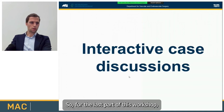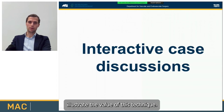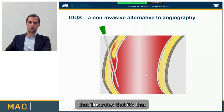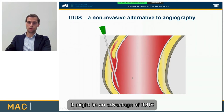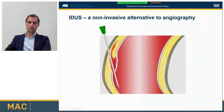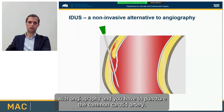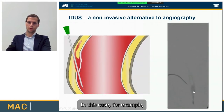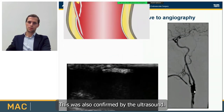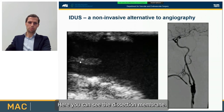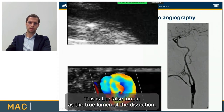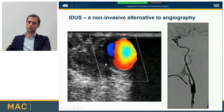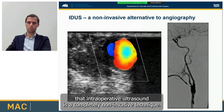For the last part of this workshop, I brought a couple of interesting cases that illustrate the value of this technique. The first case illustrates an advantage of intraoperative duplex ultrasound being a completely non-invasive technique — with angiography you have to puncture the common carotid artery, and in very rare cases this can cause a dissection. In this case, that happened. The dissection was confirmed by ultrasound, showing the dissection membrane, the false lumen, and the true lumen — also visible on the transverse scan showing both lumina with the membrane in between.